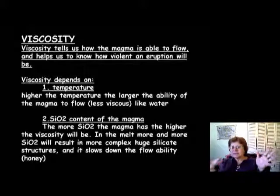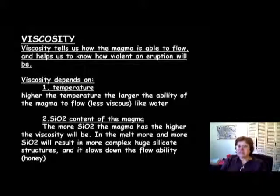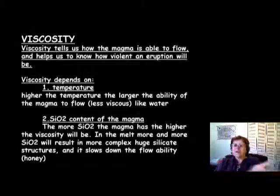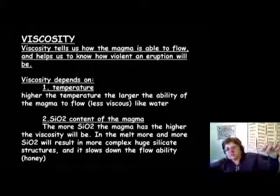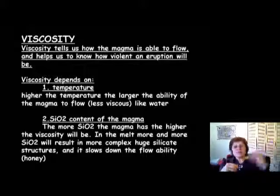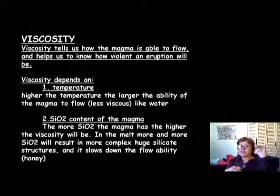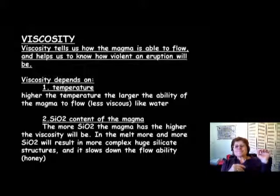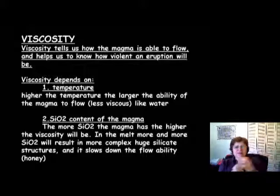When the SiO2 amount is much higher, like a felsic magma, the magma is full of huge three-dimensional or sheet silicate structures moving around. Therefore the magma moves much much slower. The higher the silica content, the higher the viscosity; the lower the SiO2 content, the lower the viscosity. High viscosity magma moves like honey; low viscosity magma moves like water. This is important because it relates to the explosiveness of the magma.